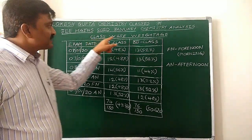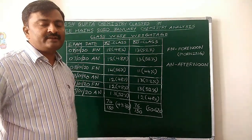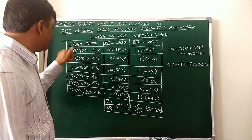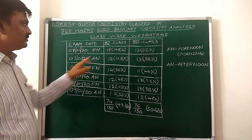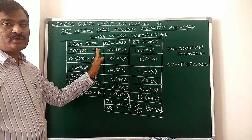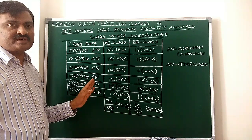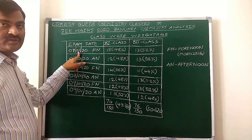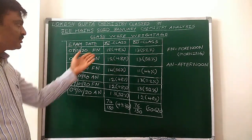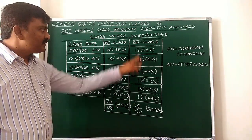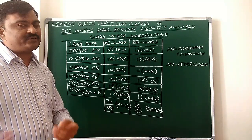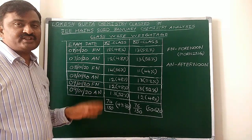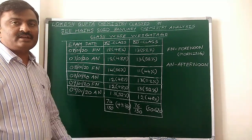Class-wise means 11th class, that is Intermediate 1st year, and 12th class, that is Intermediate 2nd year weightage. In this table I have given exam day, 11th class questions, and 12th class questions out of 25 questions. On 7th January morning, from the 11th class and 12th class, they gave nearly 12.5 each — since 12.5 is not possible, they gave 12 and 13. So in the 7th January morning timing, they gave equal weightage for 11th class and 12th class.